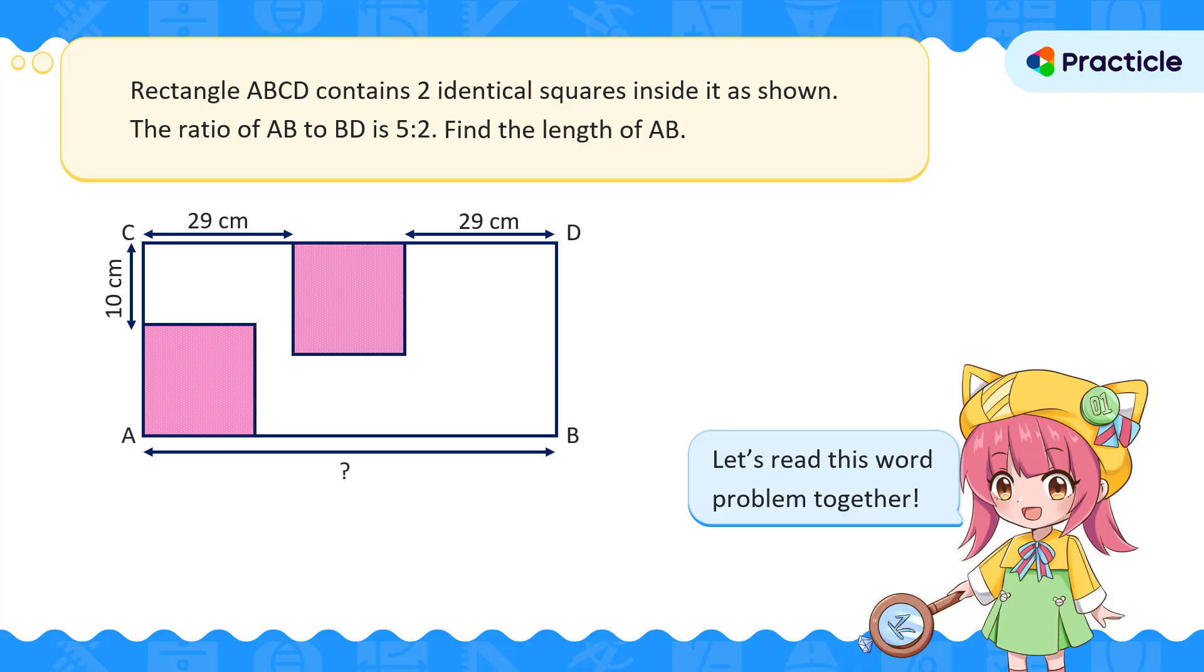How would you solve this problem? Let's see, what's the first thing that you notice in the diagram? Did you say the two shaded squares? Since they're identical, each side will be the same. We don't know the exact length yet, so let's call it x for now.